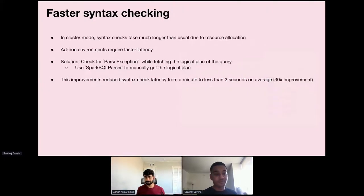Next thing was also as a byproduct of waiting for resources to be allocated on Yarn. Syntax checking becomes extremely slow. In cluster mode that obviously takes a lot of time, but in ad hoc environments we want the query to fail fast in case there are any issues with it. The solution to do this is to fetch the logical plan again even before the query is submitted to our Yarn cluster and check for parsing exceptions while fetching the logical plan. How we do this is we just use the Spark SQL parser from the Spark library. The parse exception also has the line and column numbers which we return back to the client to highlight the exact part where the query had issues. This led to an improvement of checking syntax within less than two seconds on average, as compared to over a minute in simple cluster mode.